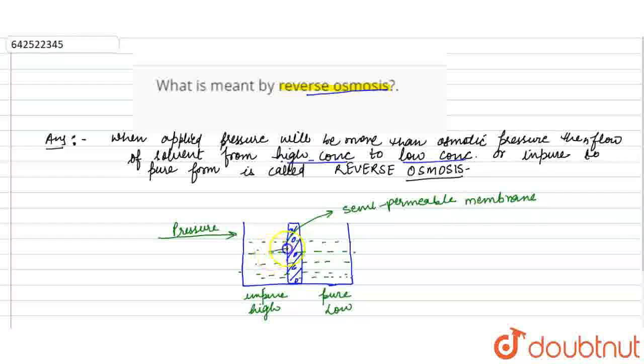So the movement of solvent is from this side. This semi-permeable membrane does not allow impurities,